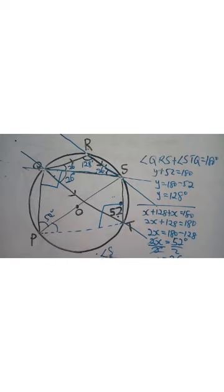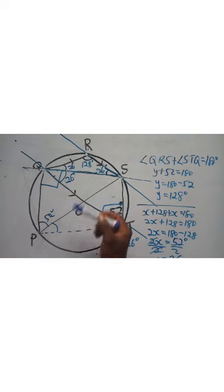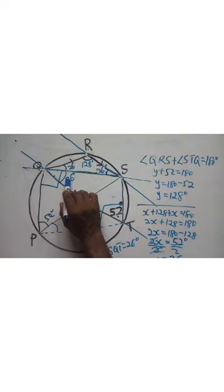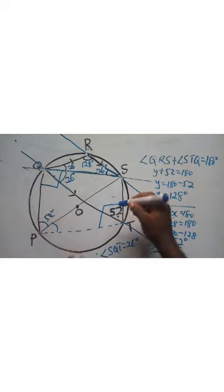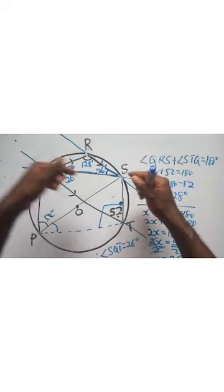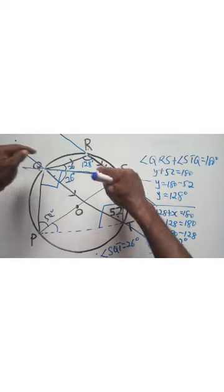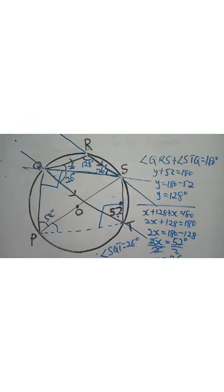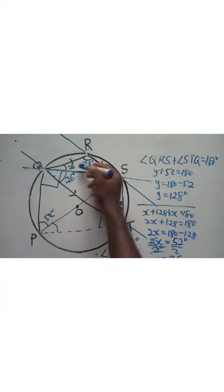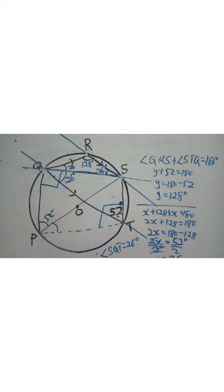Since angle RSQ is 26 degrees, and angle RSQ alternates with angle SQT, the angle SQT is also 26 degrees. To summarize the approach: the 52-degree angle is formed by chord QS. That chord forms an angle at QRS in the opposite segment, so they add to 180, giving QRS as 128. From the isosceles triangle, we get each base angle as 26, and by alternate angles, angle SQT equals 26 degrees.